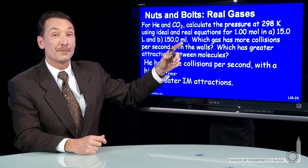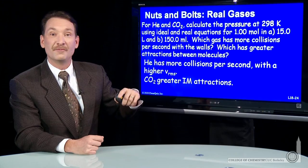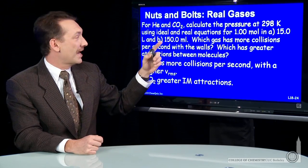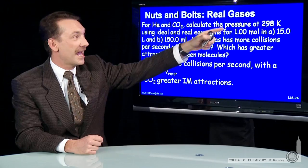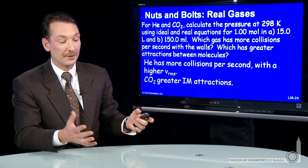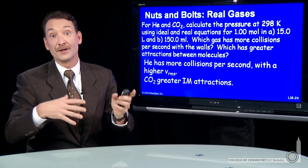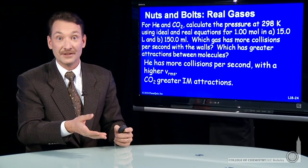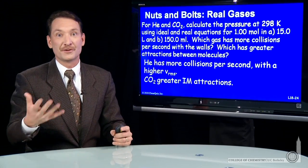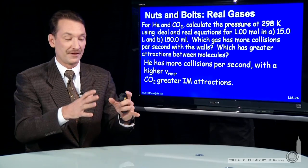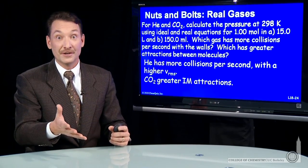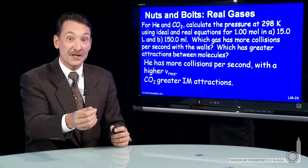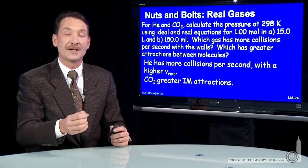Let's do the calculation for the pressure of one mole of both gases in a 15 liter and 150 milliliter flask at 298 K. Now, they could be mixed or in separate flasks — it doesn't matter. If they're mixed, we'll calculate a partial pressure for each. If they're separate, the partial pressure and the total pressure will be the same. Either way, we can calculate the pressure for helium and carbon dioxide.